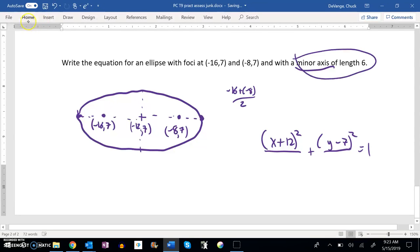Now that distance is this distance right here. The whole axis is 6 long. So if the whole thing is 6 long, this part is 3 long. So I know I have an offset of 3 in the y direction. I know that's a 9.